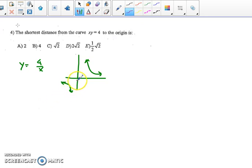So we are trying to minimize the distance from the origin to the curve. And no matter which branch of the curve we choose, it will be the same distance because of the symmetry in the curve. So I like to just work in the first quadrant with positive numbers.